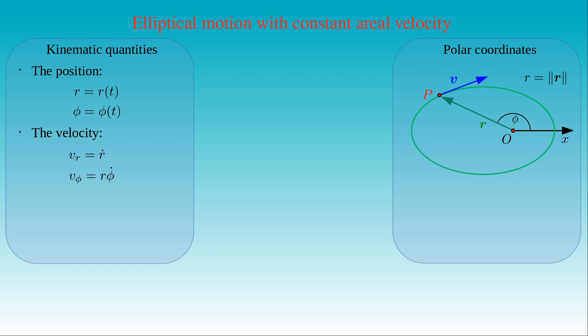Since the motion of the body is not uniform, its acceleration is not perpendicular to the velocity. The radial component of the acceleration is equal to R double-dot minus R times the square of phi-dot, and its azimuthal component is given by R times phi double-dot plus two times R-dot times phi-dot.